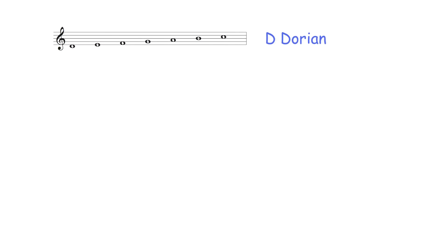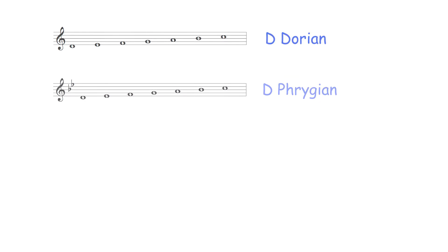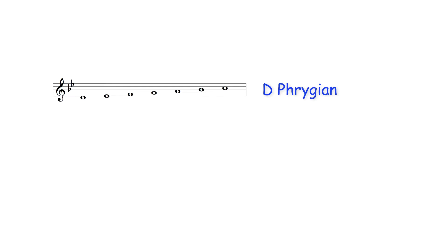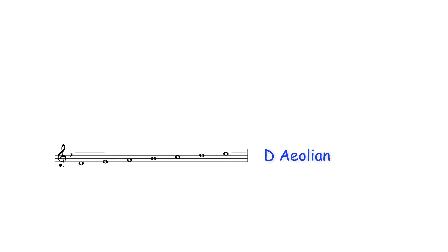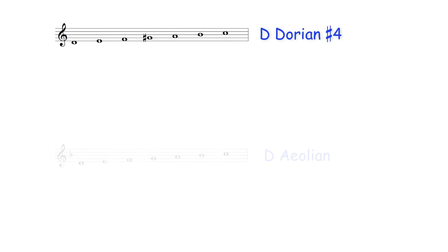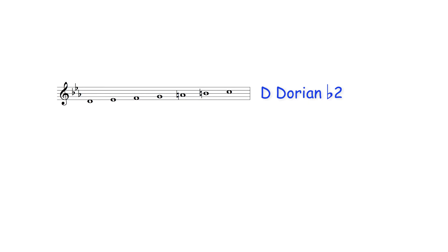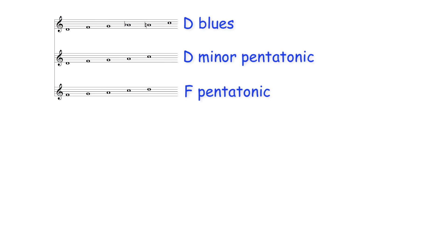The scalic or modal options for improvising over a D minor 7th chord therefore include the D Dorian mode — the second mode of the C major scale — the D Phrygian mode — the third mode of the Bb major scale — the D Aeolian mode — the sixth mode of the F major scale — the D Dorian sharp IV mode — the fourth mode of the C melodic minor scale — and the following blues and pentatonic scales.